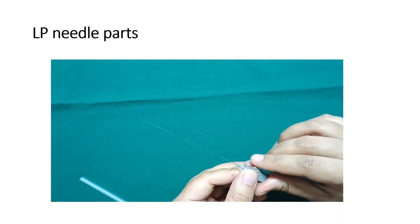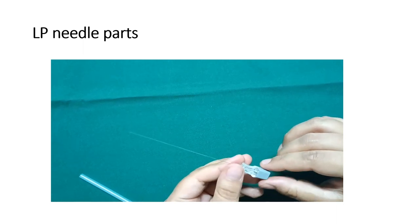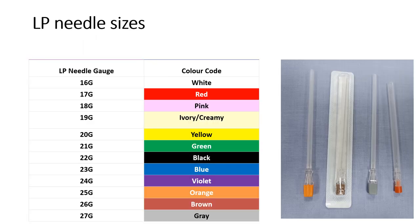The various sizes of lumbar puncture needle range from 16 gauge to 27 gauge. These are the various color codes: 16 gauge is white color. In this image you can see the brown color 26 gauge spinal needle, the orange color 25 gauge, and the gray color 27 gauge needle.